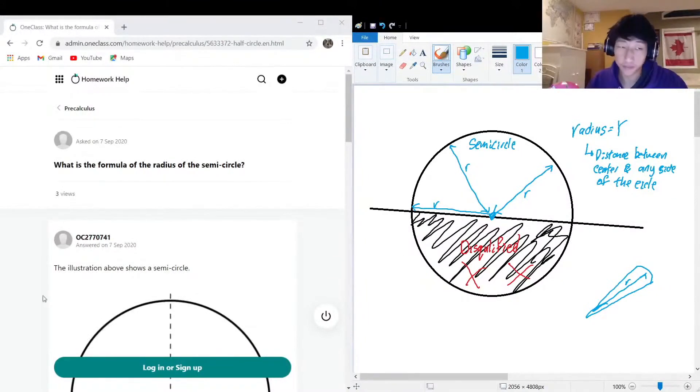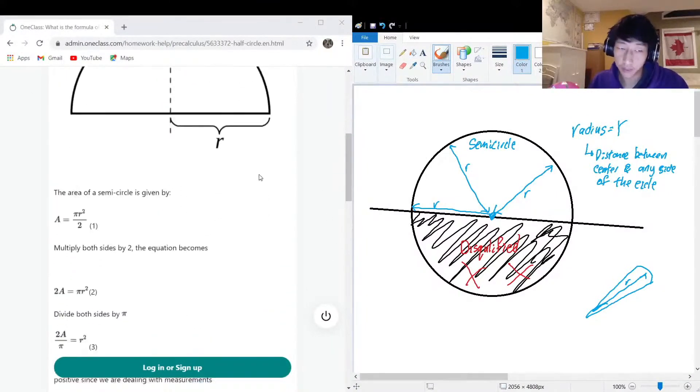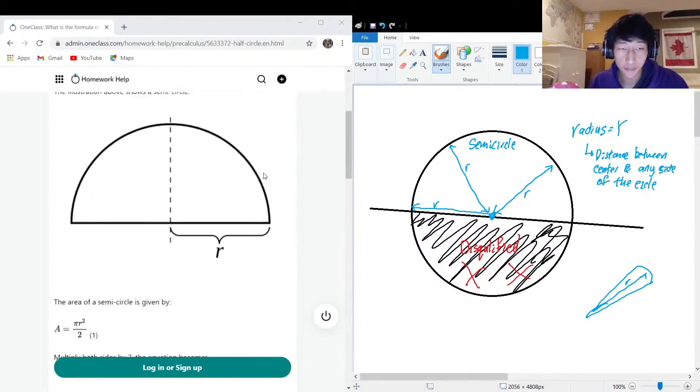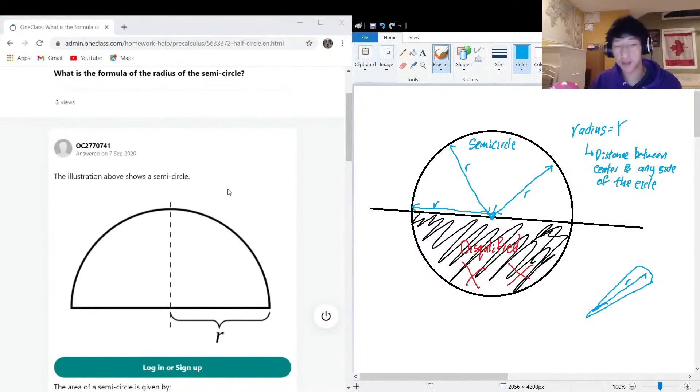So radius is kind of an indirect way of knowing the degree of curvature in a circle. It's always the same whether it's a full circle or half circle. You can measure it this way, straight up, at any angle you like. Radius is always going to be the same, I promise you.